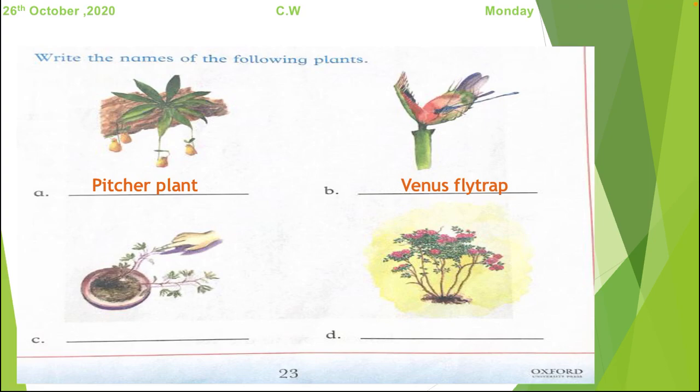B. There are flies on the plant and the plant have opened their mouth. So which plant is it? Yes. Venus flytrap. Because they eat flies.